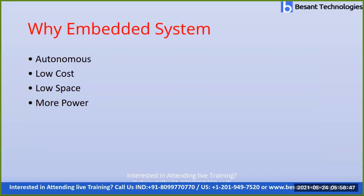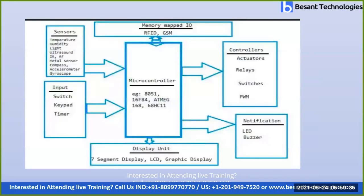IoT is actually derived from embedded systems. Embedded systems are hardware that works based on software commands. Previously, embedded systems were used for controlling hardware. For example, a mobile is an embedded system. When it comes to IoT, controlling home appliances like lights and fans using a mobile phone is a best example of IoT.